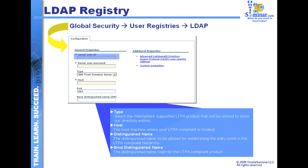There are several different properties in here that we'll have to set up. Of course, we're going to have to have some type of a login ID, so you have to have some type of a user ID, followed by the password information. These are fields associated with the login aspects of the LDAP architecture. After that, we're going to be able to specify the type of architecture we're going to be working with, using a drop-down list box here from which we can pick and choose exactly which one of the LDAP architectures we want to go with.